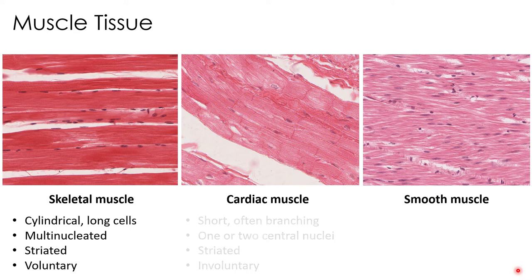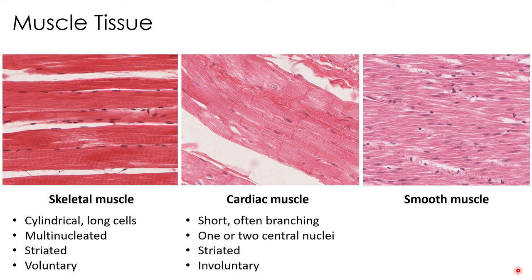Cardiac muscle is obviously found in the heart, and these muscle cells are short and often branching. They contain only one or two nuclei that are more centrally located. They are still striated, similar to skeletal muscle, but these muscle fibers are involuntary. I can't tell you to stop your heart beating — you have no control over that.